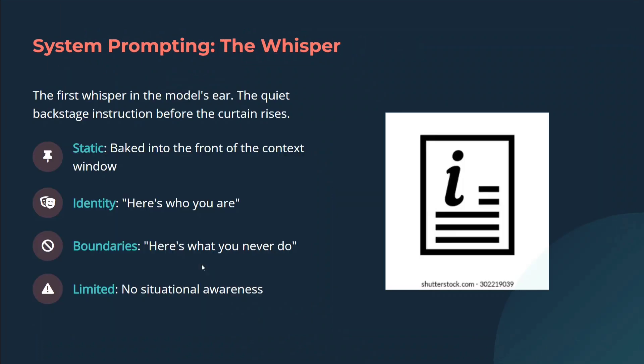System prompting is the whisper — the first line you mention. That first whisper in models is static, baked into the front of the context window. Identity: here's who you are — you are a chef, you are a dog, etc. Boundaries: here's what you never do. And it is limited — no situational awareness. So you give it very static prompts, more objective things, some rules the LLM must remember. There is no situational awareness you are trying to provide within system prompting.